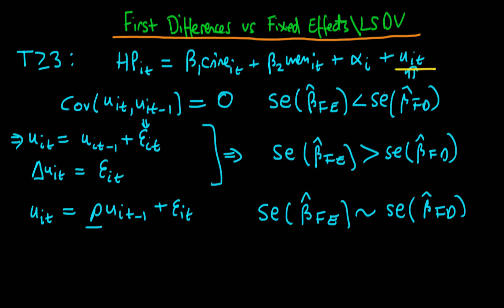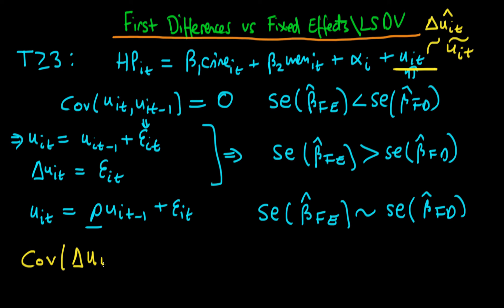Another point is how do we actually know if we have serial correlation in the original error, because in first differences estimation what we end up estimating is the first difference of the error, and in fixed effects we estimate the time-demeaned error u_tilde_it. The way to think about this is: estimate the first differences model and look at the covariance between our estimated first-differenced error and the first lag of that estimated first-differenced error. If this covariance is negative and significant, that is indicative of errors in the original model that were serially uncorrelated.